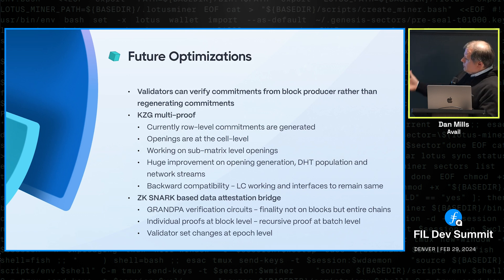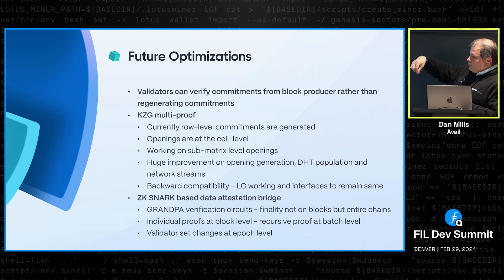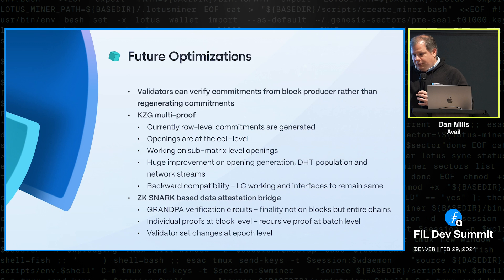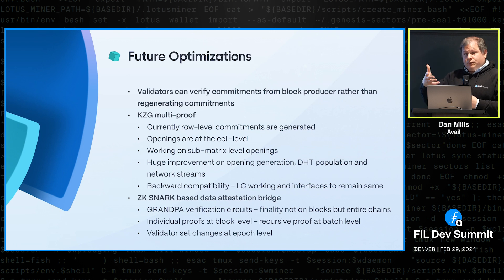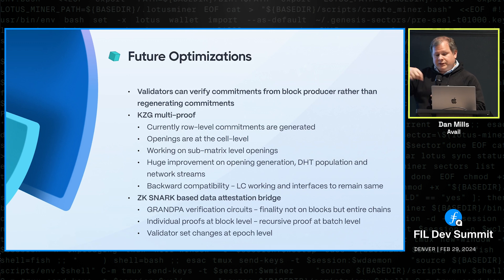We have a ZK data attestation bridge. We have a bridge that creates ZK proofs of Avail's consensus, and we're able to verify those on Ethereum — so on Ethereum you can verify that Avail has some particular data with a very high degree of confidence. Chains becoming what are called validiums — essentially rollups that put data off-chain — use this bridge to verify their data is correctly off-chain.